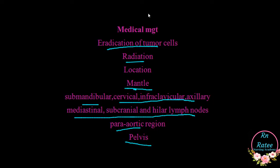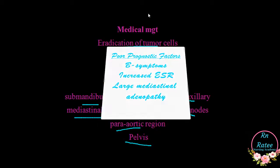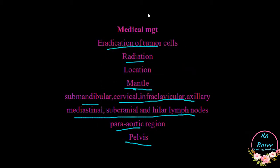There are some unfavorable prognostic indicators, and poor prognostic factors determine how we monitor combination chemotherapy and radiation therapy for stage 1 and 2.